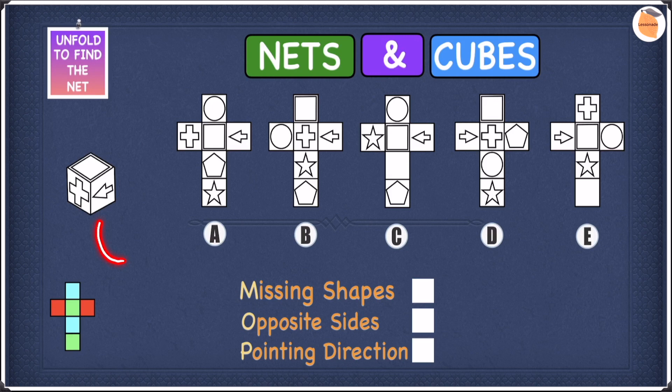If you have a look at the cube we have right here, we have three shapes: we have an arrow, we have a plus sign, and we have a square. So if you find a net that does not contain all three of these shapes, then we cross it off, because we want all three of the shapes and nothing less.